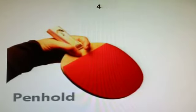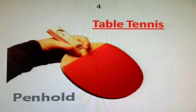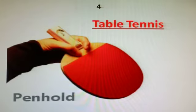The next term is Penhold. Penhold is the term used in table tennis. It is the Asian style grip of holding the racket, where the head of the racket is facing down and is held the way a person holds a pen or pencil, like you can see in this picture.